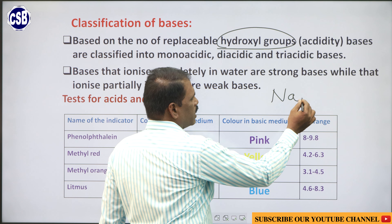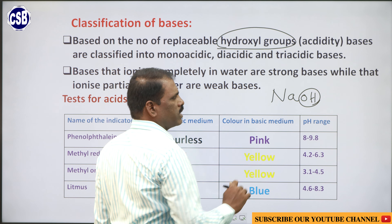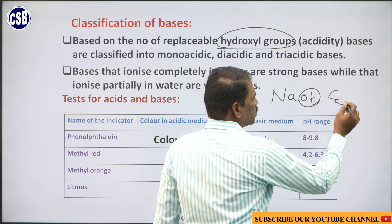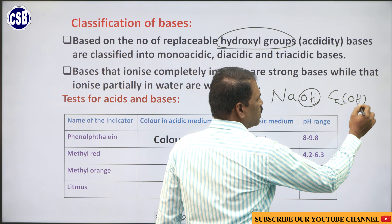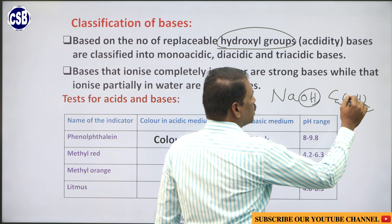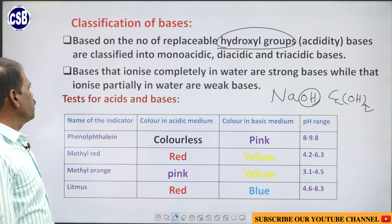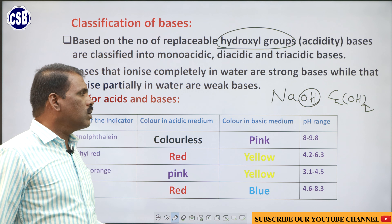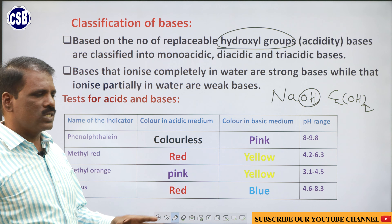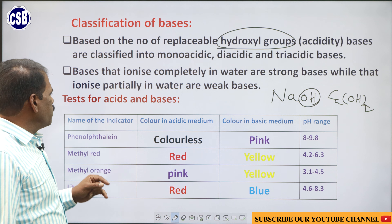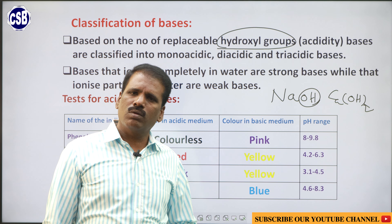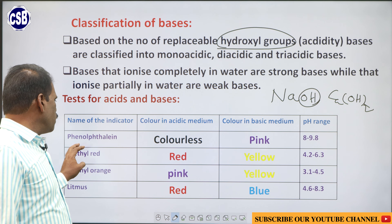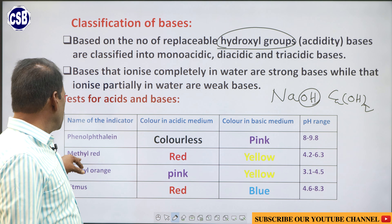Similarly, when you come to the properties of bases: bases are bitter in taste, they turn red litmus into blue, aqueous solutions have a soapy touch, and they conduct electricity. When bases react with metals, they form salts and liberate hydrogen gas. They react with non-metallic oxides and acids to form salt and water. When heated with ammonium salts, they give out ammonia gas. These are some of the properties of bases.